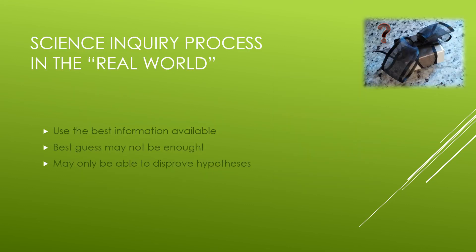Scientists develop hypotheses using the best information available to them, but sometimes that simply isn't enough. It's possible that all of you were wrong — perhaps Jaime wanted to send you something you'd never seen before. In that case, none of the hypotheses would have been right. You may sometimes only be able to disprove hypotheses and come up with new ones to test, rather than support your original hypothesis with the information you collect.